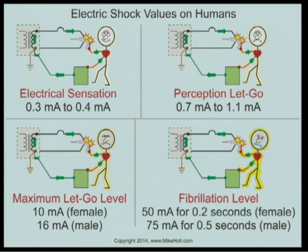You'll notice there are two different values - smaller and higher - for the thresholds. The next important value is the maximum let-go threshold. That's when you've grabbed onto something and you're getting shocked, but above that current value you cannot let go.